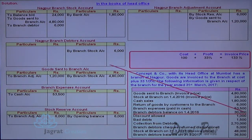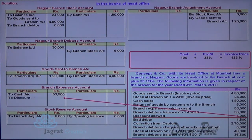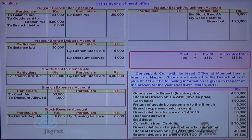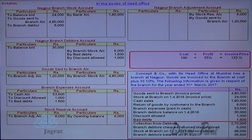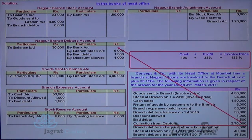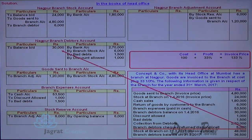Branch debtors opening balance is recorded as balance brought down in the debtors account. For discount allowed: branch expense account debit to debtors account credit. For bad debts: branch expense account debit to debtors account credit. For collection from debtors: cash or bank account debit to debtors account credit. For cheques returned dishonored, write the reverse entry: debtors account debit to bank account credit.